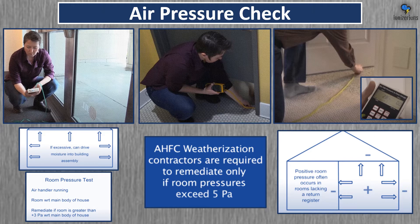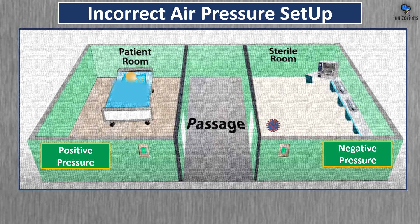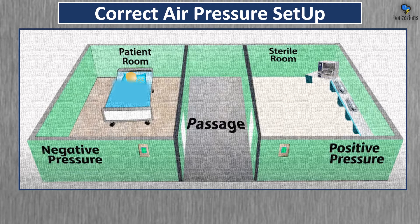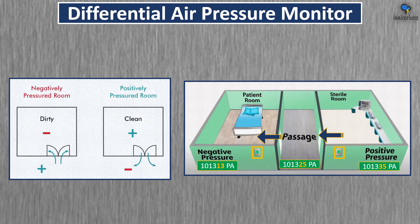Whether your home is poorly insulated or not matters. Here is an incorrect air pressure setup. When you're sick, you're not supposed to be in a positive pressure room, because when you exhale virions it'll leave the room and can get other people sick. Here is the correct setup: you're supposed to be in a negative pressure room when you're sick. That way, when you cough out virions they will more likely stay in the room. With certain types of air pressure monitors you can actually measure this.